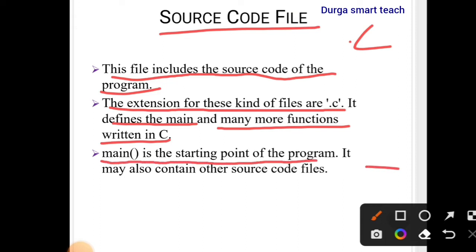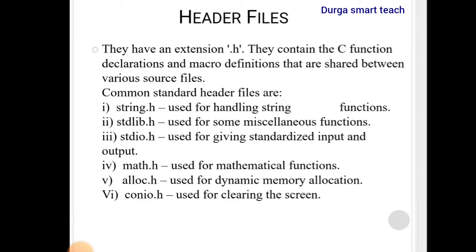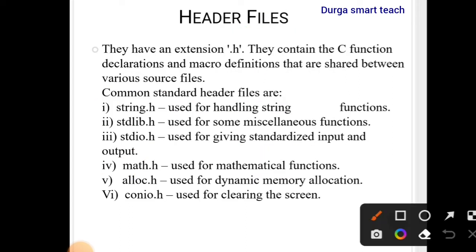The source file defines the main function and many more functions written in C. Main is the starting point of the program. It may also contain other source code files — so in one main file it can include many more files. The source file extension is dot C.